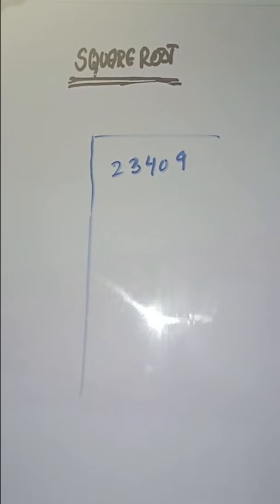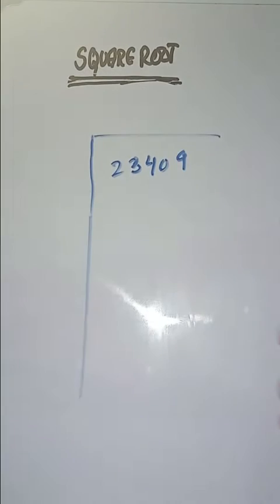We have to find square root of 23409. So first step is we have to make pairs from right to left like this.